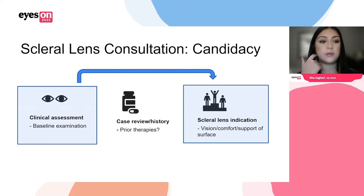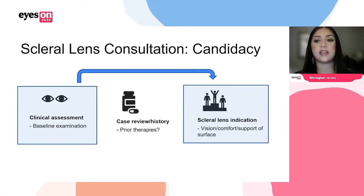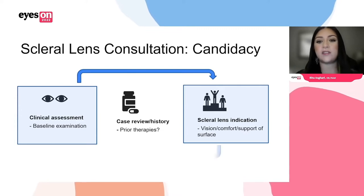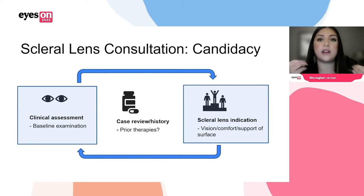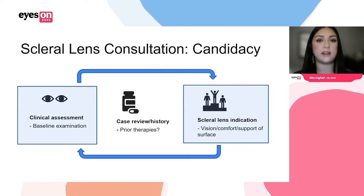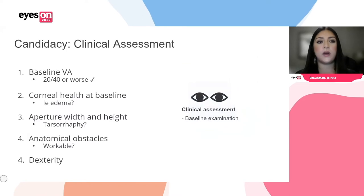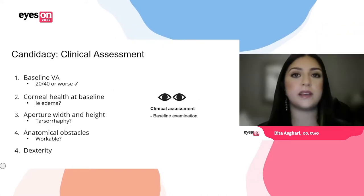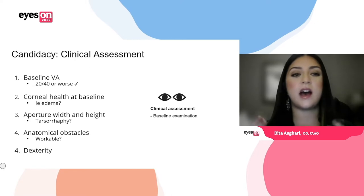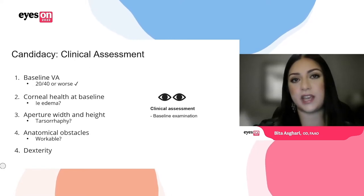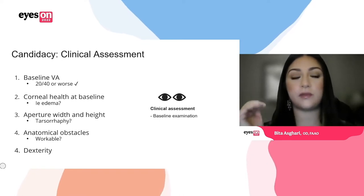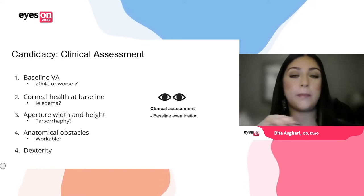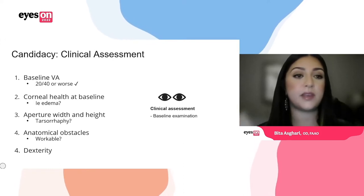If the patient has significant corneal staining, a persistent epithelial defect, or is at risk of a melt, that indicates there's reason for supporting the surface of the eye. If the patient says they're uncomfortable or unhappy with their vision, you depend on your clinical assessment to determine if they're an appropriate candidate. The rule of thumb is 20/40 or worse is when you consider a scleral lens. I always tell patients it's a lot easier to take them from bad to good than from good to great, which is why 20/40 is the threshold — trying to exceed that can be very challenging.